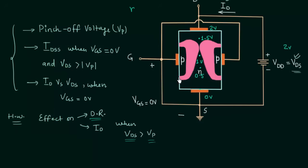If you examine this PN junction, the P-type material is at 0V potential and the N-type material near the top is at 1.5V, so the PN junction is reverse biased with a reverse biasing potential of 1.5V at the top. For the bottom of the N channel, the reverse biasing potential is 0.5V.